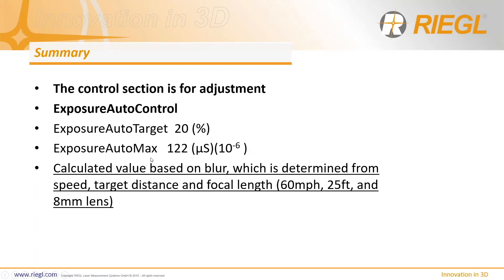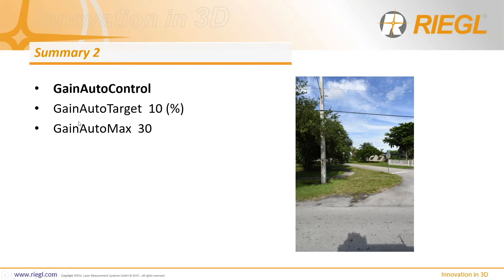That Excel file will also be included with the information package from this webinar. The 20 percent exposure control value is a recommendation for typical conditions — a sunny-ish day with some cloud cover. You can adjust it as you see fit and you'll see results immediately. This maximum exposure time number is the big one — adjusting it will improve images faster than anything else. On the gain control side, aim for 10 percent and lower the maximum from 40 down to 30 percent.